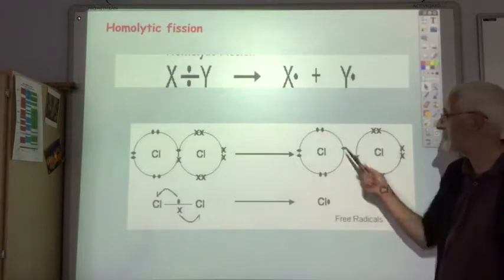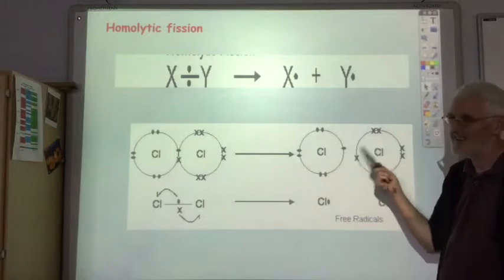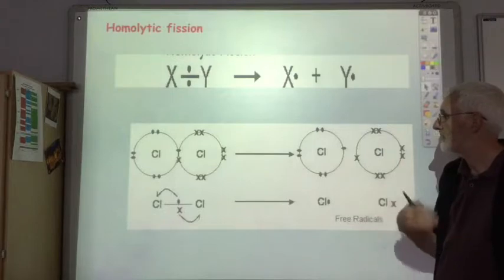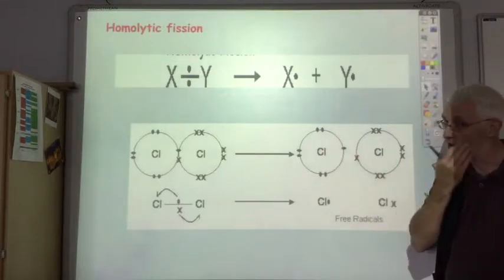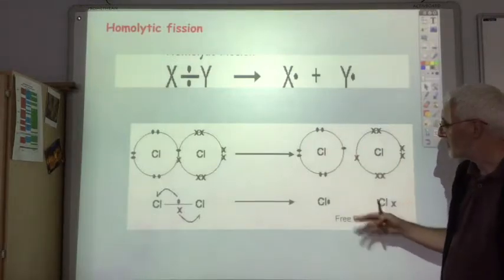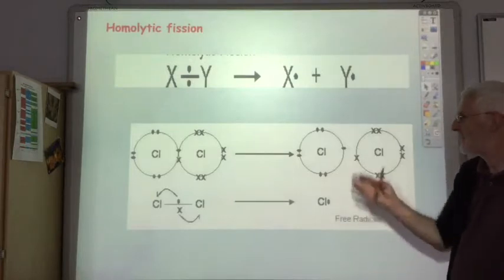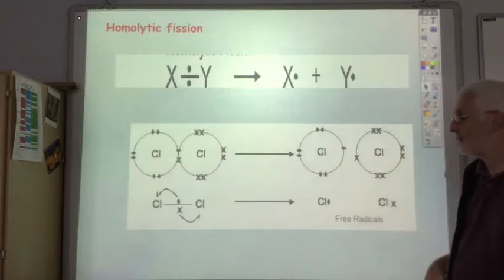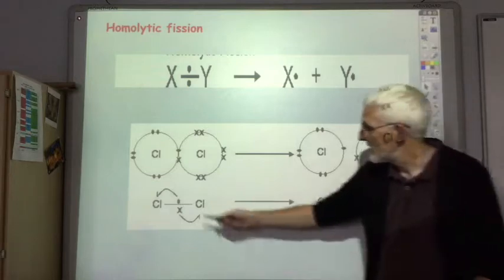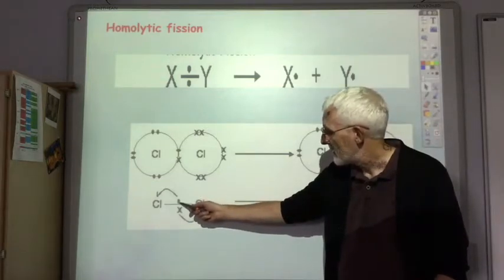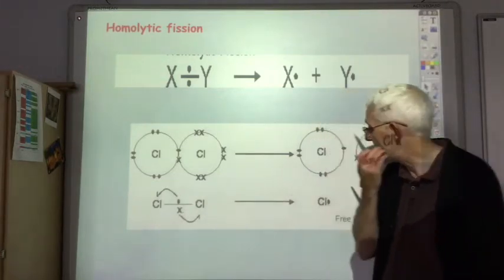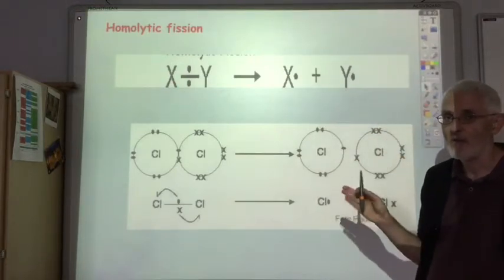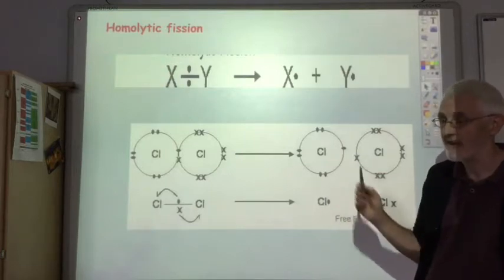No charge, they're neutral, but these atoms don't like being on their own. They haven't got full electron shells so they're not very stable, so they're called free radicals and they're very reactive because these chlorine free radicals are going to want to react to something to get a full outer shell. So when it splits up, one electron goes to one atom and one electron goes to another atom, that's homolytic fission, by far way much less common than the heterolytic fission.